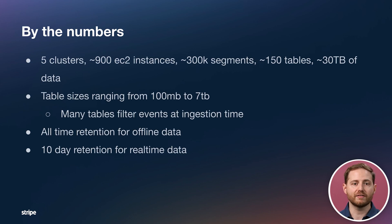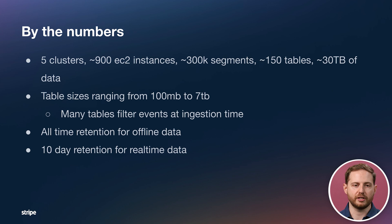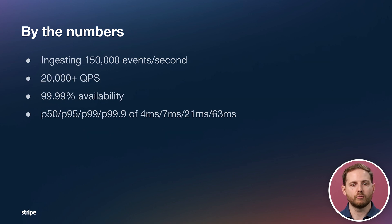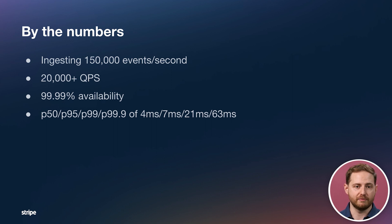Where we are today: five clusters, 900 EC2 instances, 300,000 segments, 150 tables, and 30 terabytes of data — a very large-scale cluster. Table sizes range from 100 megabytes to seven terabytes. We keep all-time retention for offline data and 10-day retention for real-time data. We're ingesting 150,000 events per second, with 20,000 QPS and growing. We're maintaining four nines of availability. Our P50 latency is 4 milliseconds, P95 is 7 milliseconds, P99 is 21 milliseconds, and even the P999 is 63 milliseconds — definitely meeting our SLCs and even beating the existing system in many cases.